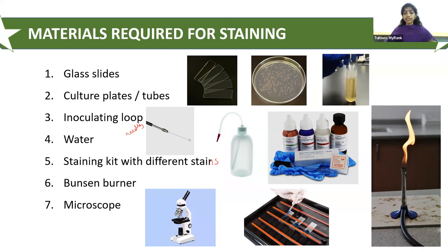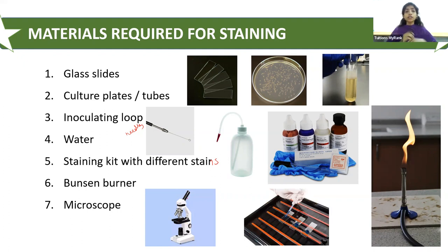Depending upon the staining method carried out, there will be different kinds of stains like saponin, crystal violet, iodine, alcohol, and so forth. Additional materials include a Bunsen burner, a microscope, and a staining kit tray where you place the glass slide to perform the staining. Apart from these, we may also require oil for observing under oil immersion lens, and blotting paper to remove excess stain.